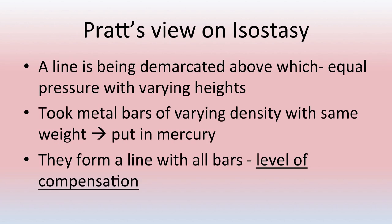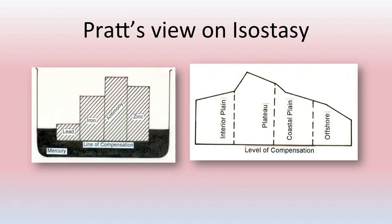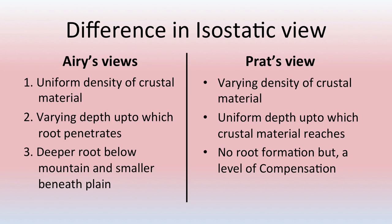A line is demarcated above which equal pressure with varying heights can be seen. Pratt took metal bars of varying density with the same weight and put them in mercury — they formed a level of compensation at which all the bars were floating. The difference between Airy's and Pratt's views: Airy assumes uniform density with varying depth, while Pratt assumes varying density with the same depth and a level of compensation.